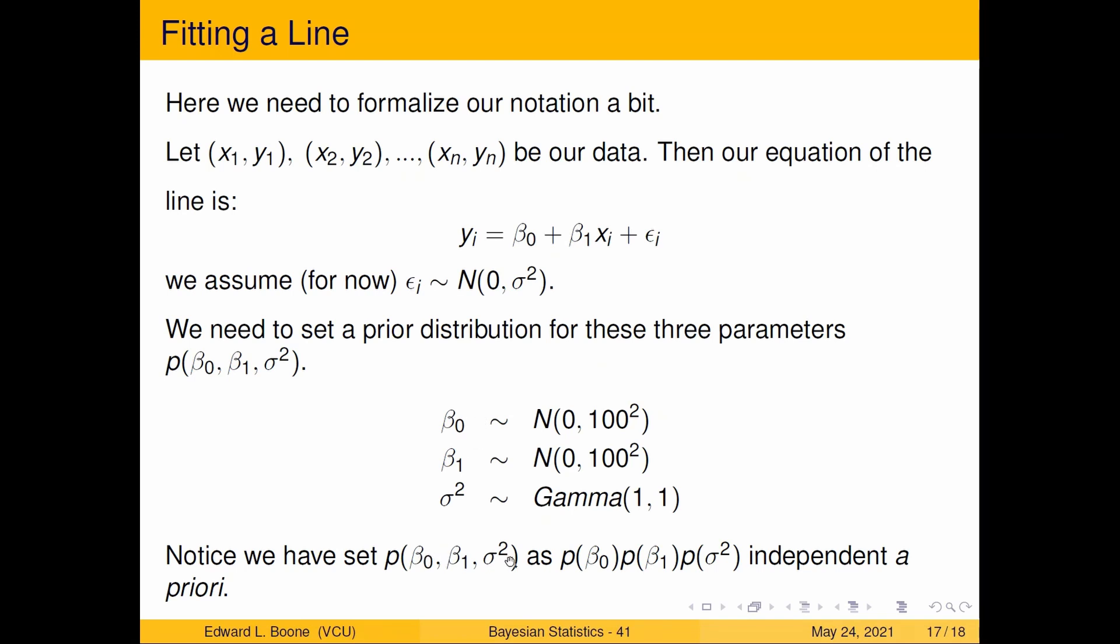So we're setting them separately as if they're independent, not in some joint distribution setup. So beta zero, we're going to say, well, I don't know what it is. Could be negative, could be positive. So I'll make it zero and I'll make it a hundred squared is its variance. And then beta one, I don't know what value it is. Could be negative, could be positive. Well, a hundred squared is its variance as well. Sigma squared. I don't know what value that thing is. Why don't we do a gamma one, one. These are relatively what I want to call naively uninformative values.